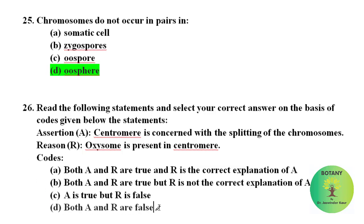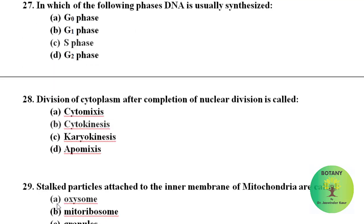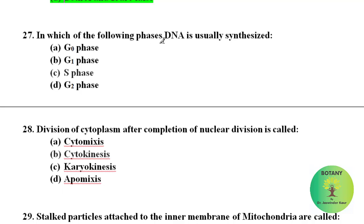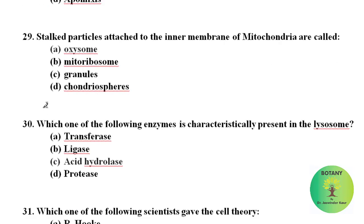In which of the following phases DNA is usually synthesized? DNA is usually synthesized in S phase, that is the synthesis phase. Division of cytoplasm after completion of nuclear division, that is called as cytokinesis. Stalked particles attached to the inner membrane of mitochondria are called as oxysomes. Oxysomes are also called as F0 F1 particles and ATP synthetase.